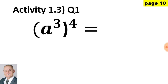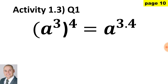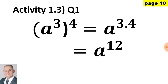Question 1 of Activity 1.3: we have a power raised to an exponent. Where a power is raised to the exponent, we would multiply the exponents. Therefore, the base a to the exponent of 3 multiplied by 4 would give us a final answer of a to the 12.